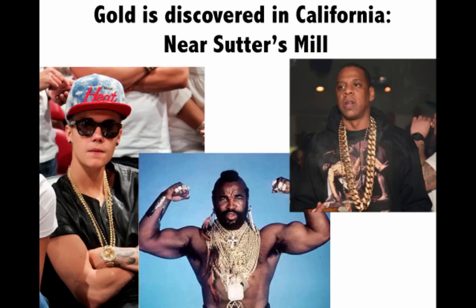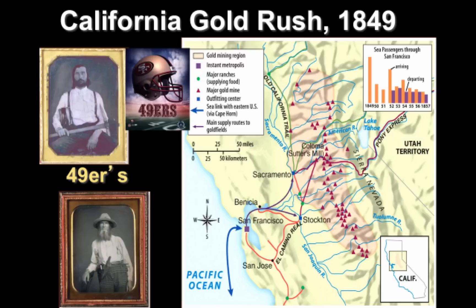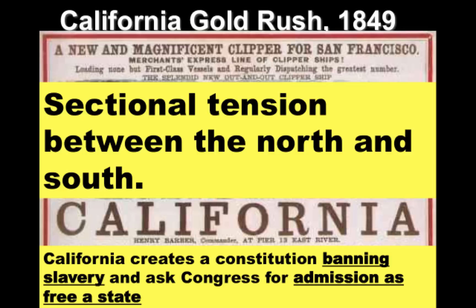But something happens — gold is discovered in 1848 near Sutter's Mill in California. Tons and tons of people, the 49ers, rush into California territory near San Francisco. By 1849, something like 100,000 settlers are coming into California. Gold paves the way for economic growth, but with economic growth comes a problem: sectional tension between the North and the South over California. In 1849, California creates a constitution banning slavery and asks Congress for admission as a free state. It's really the gold rush that accelerates this process towards statehood.